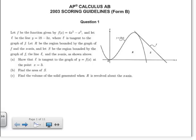Let R be the region bounded by the graph of f and the x-axis, and let S be the region bounded by the graph of f and the line l. R and S are shown above. Part a says, show that l is tangent to the graph of y = f(x) at the point x = 3.